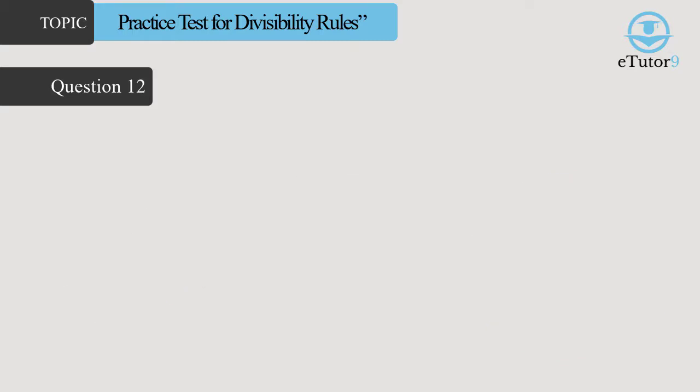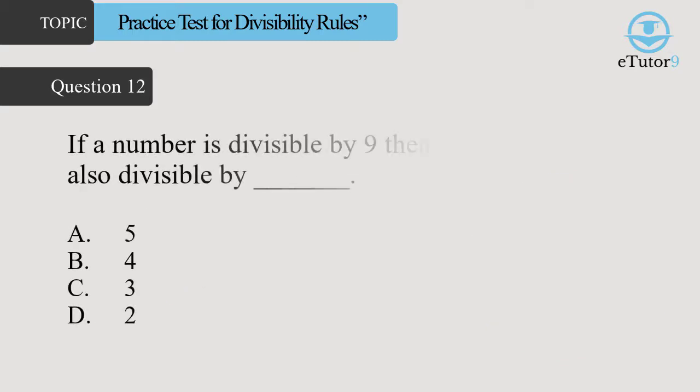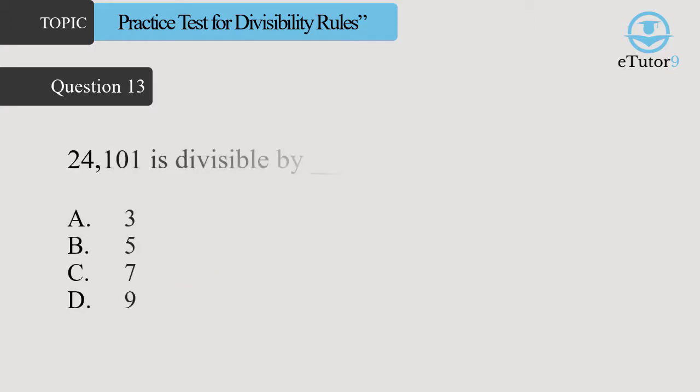Question 9: If a number is divisible by 9, then it is also divisible by dash. Answer is C, 3.